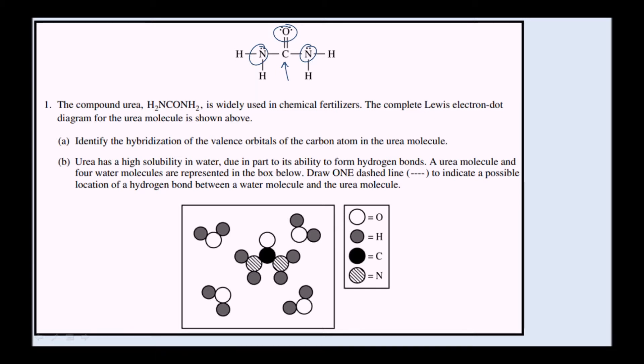This Lewis electron dot diagram has all the lone pairs shown, and the carbon doesn't have any lone pairs. So we have three atoms bonded to carbon, that's a steric number of three and a geometry that is trigonal planar. The trigonal planar molecular geometry has sp2 hybridization.